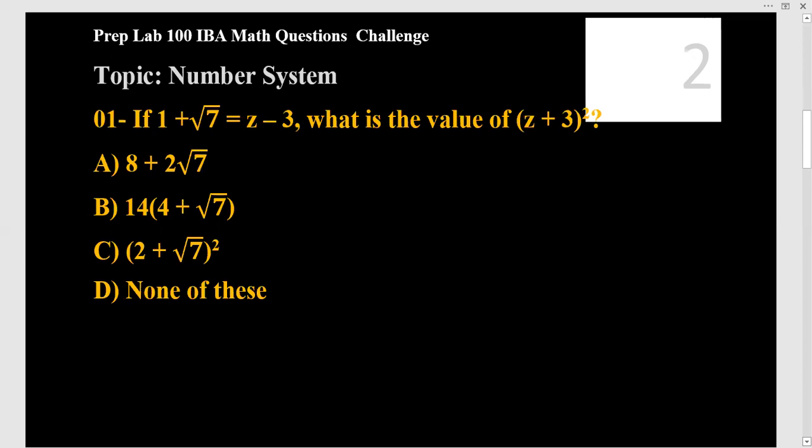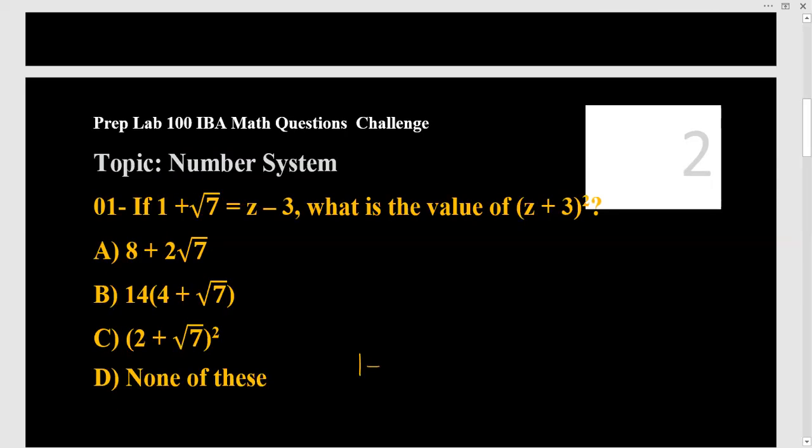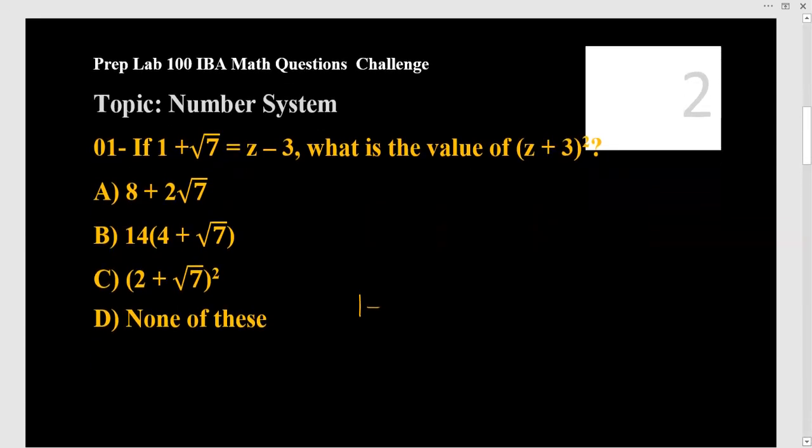So the question is saying that if 1 + √7 = z - 3, what is the value of (z + 3)²? Okay. So what we have to do? We have to write that 1 plus... okay. There's some technical problem. All right. So we write down z - 3, which is equal to 1 + √7. All right.